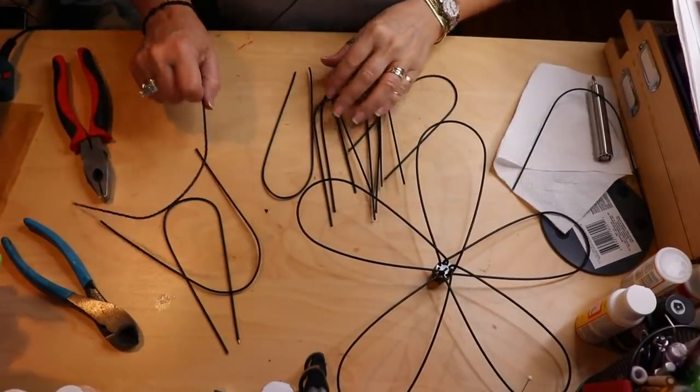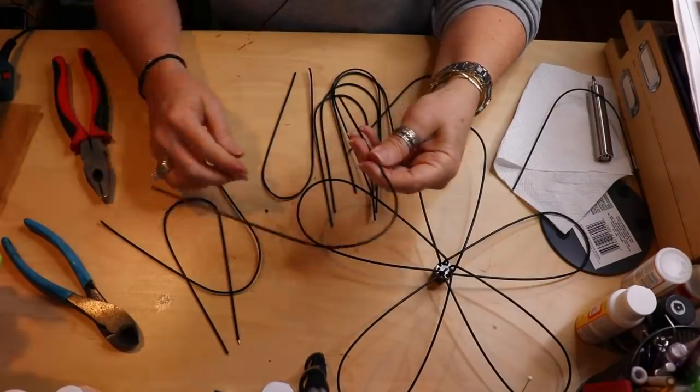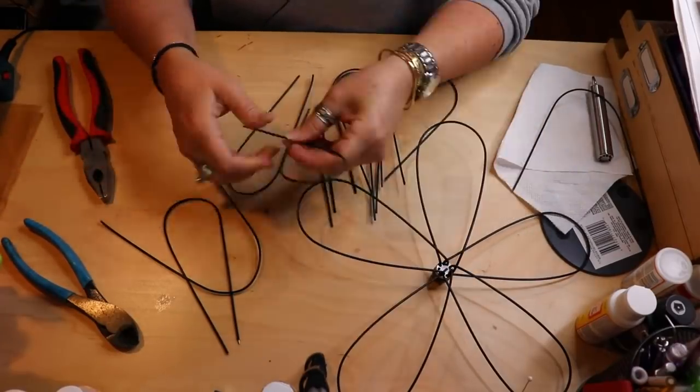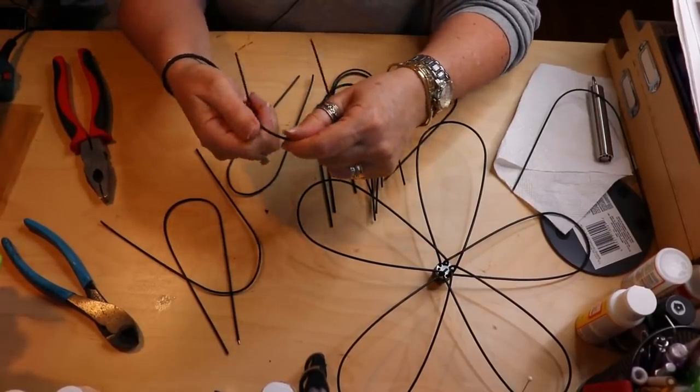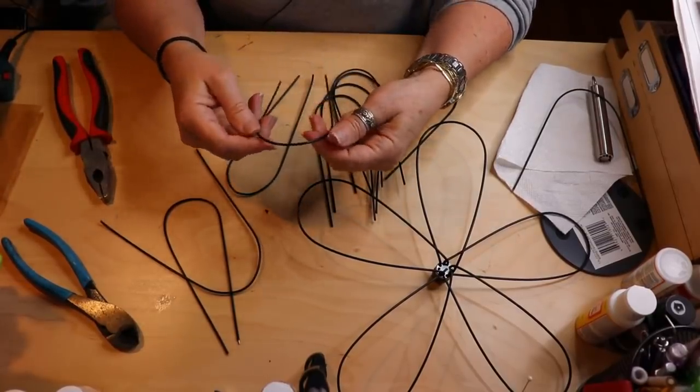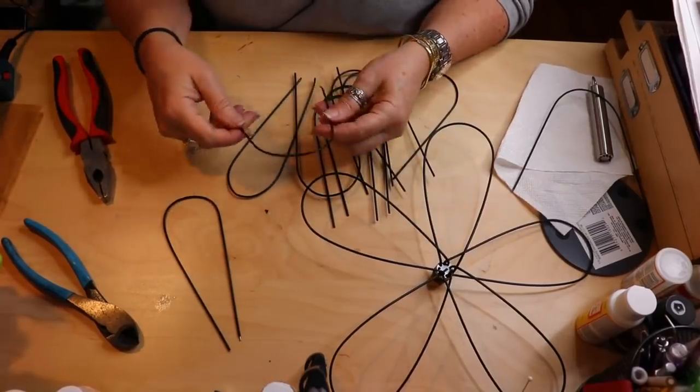And now that you have all your pieces cut off, they're going to cut just like this. You want to bend them so that they will stay a little closer to that same shape as the other ones. And do that to all of them and then we'll be on to the next step.